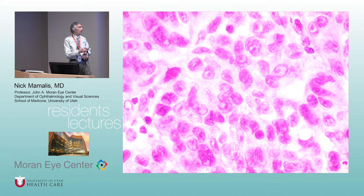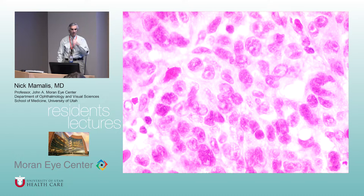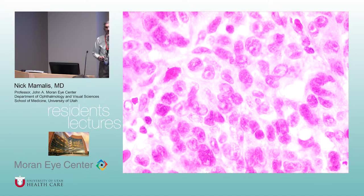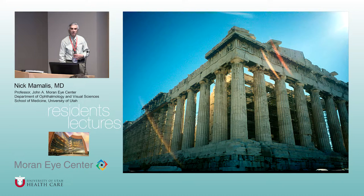About 80% of conjunctival melanomas arise from PAM, and about 15–20% arise from nevi. PAM is strictly intraepithelial, whereas nevi have a junctional component and form nests at the junction — they can go into the substantia propria. PAM cells are individual and don't nest. Clinically there are no cysts in PAM.